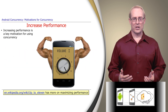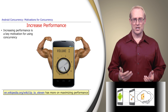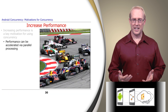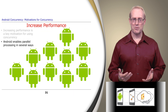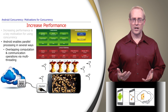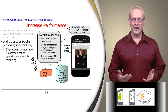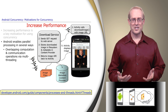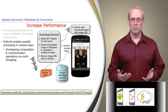Hardware and software advances also allow developers to increase application and system performance, which is a key motivation for using concurrency. In particular, performance can be accelerated via parallelism. Android accelerates performance via parallelism in several ways. One way is to overlap computation and communication operations via its multi-threading mechanisms. For example, in the image downloading application we examined earlier, the background threads that download images can run in parallel with each other and with a thread that interacts with the user. This link provides more information on Android multi-threading mechanisms.